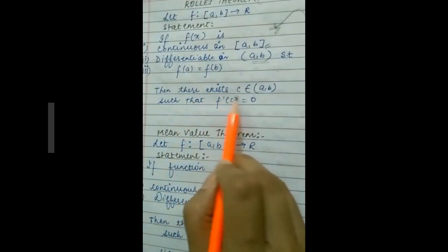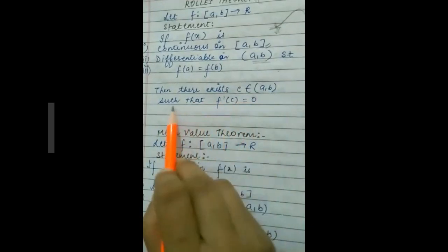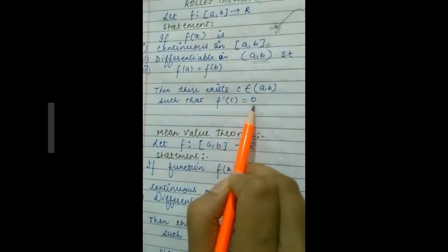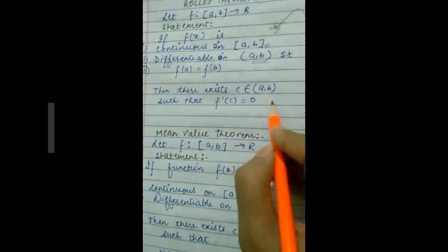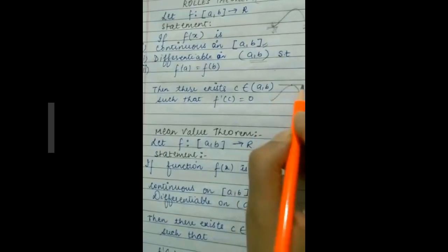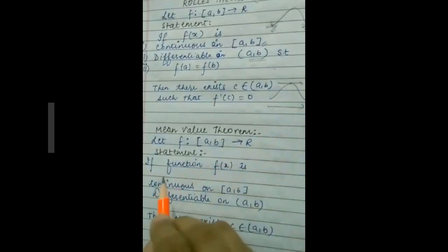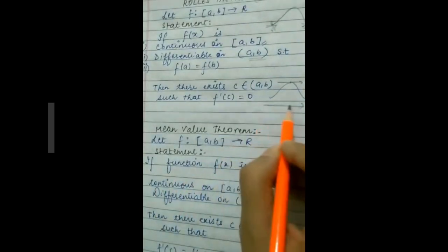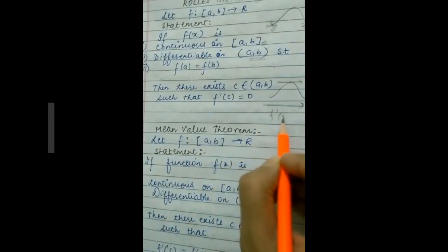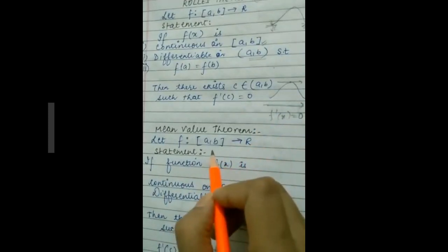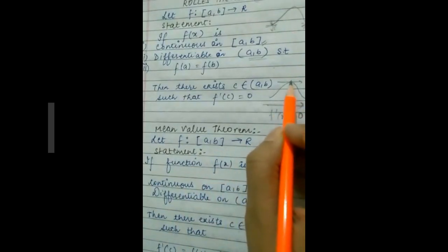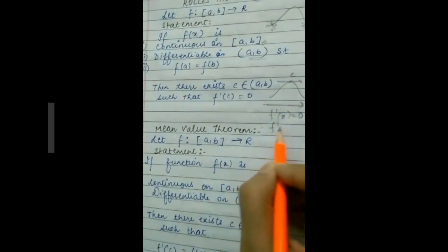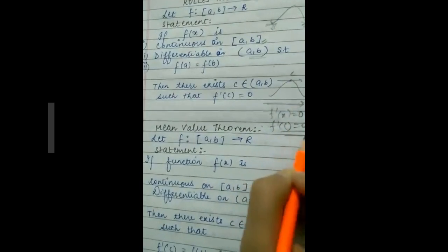If all conditions hold, then there exists c belonging to (a, b) such that f'(c) = 0. This means if this is a curve, there is a point at which the tangent is parallel to the x-axis. A tangent parallel to the x-axis is represented by f'(x) = 0, and at the point c it should be f'(c) = 0.